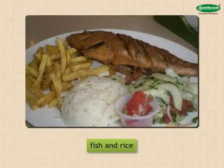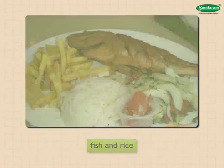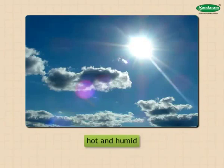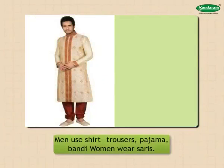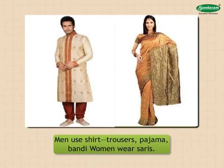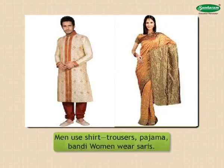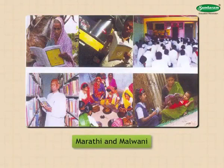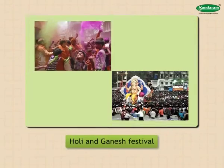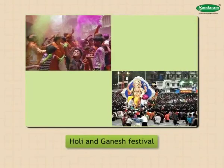The diet of people in the coastal region includes fish and rice. As the climate of Konkan is hot and humid, people generally use cotton clothes. Men use shirt, trousers, pajama, bandi, etc. Women wear sarees. Kolis near the seashore use a typical headgear. People mostly speak Marathi and Malwani. Holi and Ganesh festival are celebrated on a large scale in Konkan. Many people from Konkan migrate to Mumbai for employment.